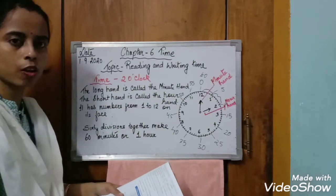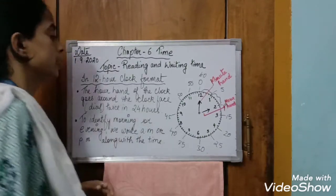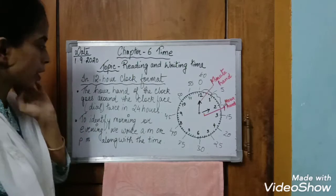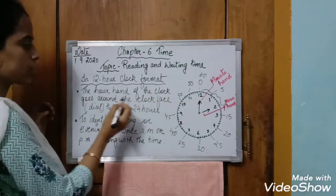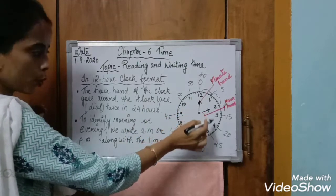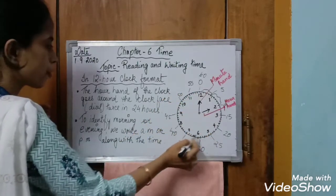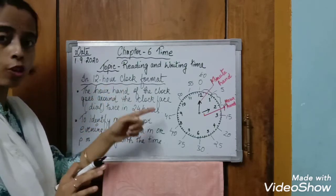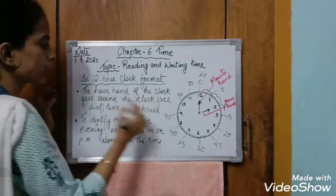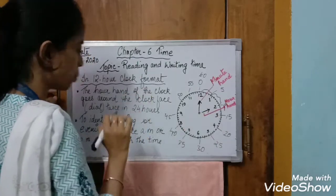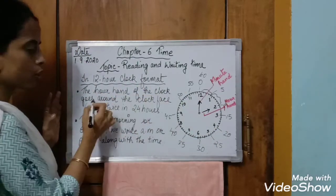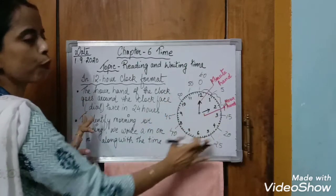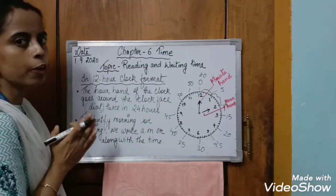Next, we are going to learn how to read the time in a 12-hour clock format. In a 12-hour clock format, the hour hand of the clock goes around the clock face — or dial — twice in 24 hours. From one position back to 12 it continues; the hour hand goes around twice in 24 hours.